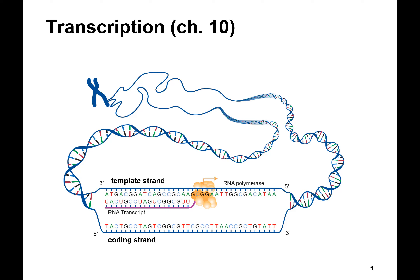The main thing to remember is that RNA uses uracil instead of thymine. So as you're base pairing, an A base in DNA will pair with U in RNA. But everything else is the same — T in DNA pairs with A in RNA, and G and C base pairs are just the same. So whenever you want to put a T in RNA, you put a U.